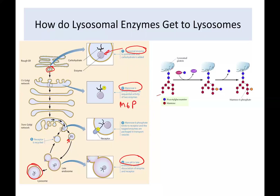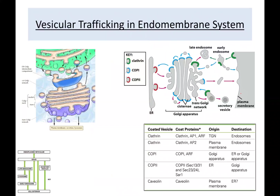As pH drops in the late endosome, the phosphate is removed and the enzyme is released within the lysosome. In detail, the lysosomal protein carries 2-N-acetylglucosamine and some mannose. A phosphate is added to create mannose-6-phosphate, which serves as the tag for lysosomal enzymes. This is how a vesicle knows where to deliver its cargo.